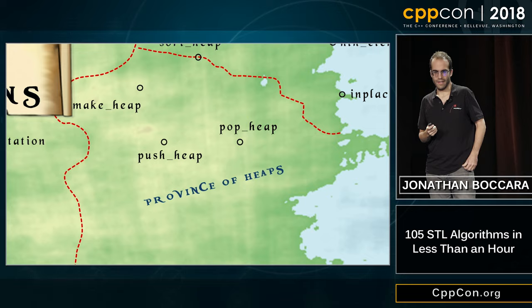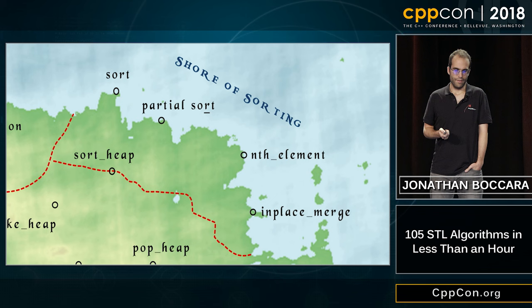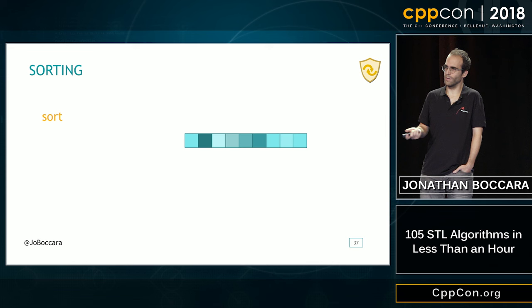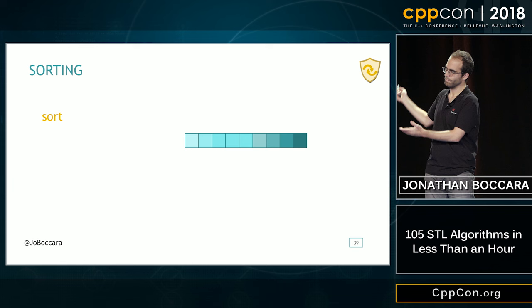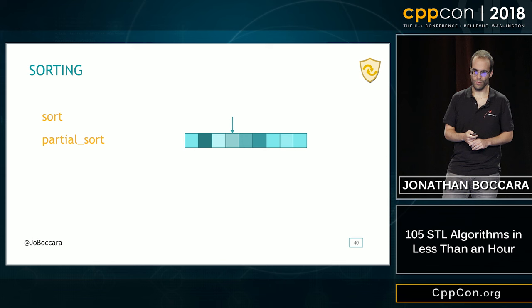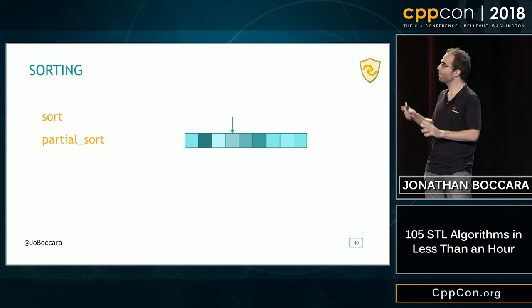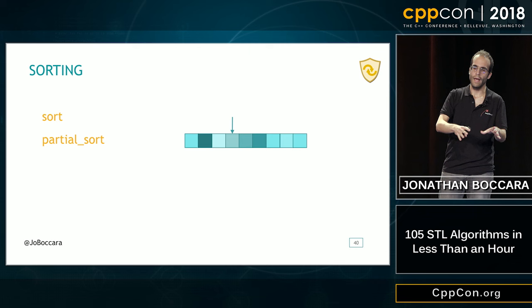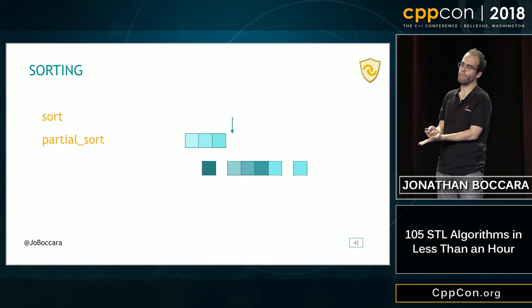Talking about sorting, this is the shore of sorting region. The simplest way to sort with the STL is probably std::sort — it takes a collection begin and end and rearranges them in sorted order. If we only want to sort the beginning of a collection, we can use partial_sort, which takes begin, end, and a middle point, sorts from beginning to that point, and leaves the rest in unspecified order.